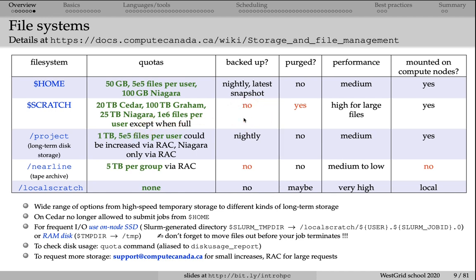For longer-term storage, we have the Project file system, which is a disk archival system combining SSDs and hard drives. By default, you have a 1 terabyte quota and half a million files in Project. If you need more storage, you can request it via the RAC allocation competition. Project is backed up, unlike Scratch, but it is not a high-performing file system — so you should not be writing gigabytes of simulation output there. For that, please use Scratch.